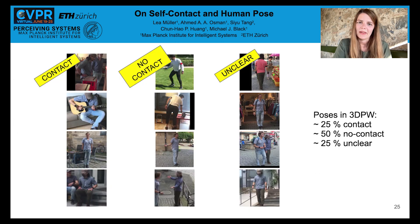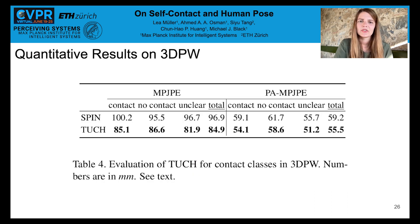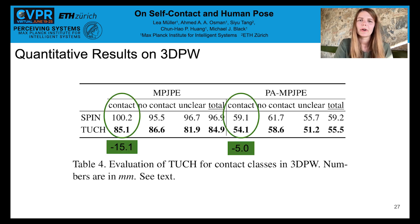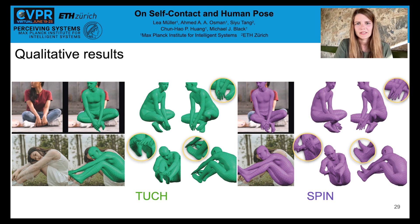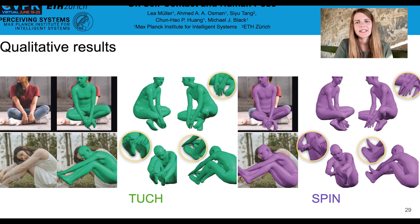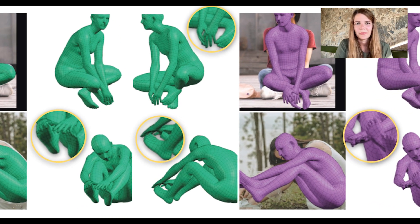To evaluate our method, we divide 3DPW into three sets: images with contact, images with no contact, and ambiguous cases. The table shows that touch training improves across the board on 3DPW, with the largest improvement coming from contact poses. Surprisingly, touch also improves on non-contact poses. Here are some qualitative examples — note how the intersections are resolved in the first row, and how nicely the hands are touching the feet in the second row.